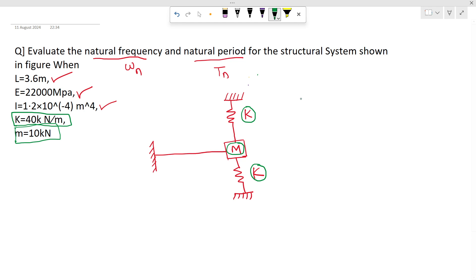We have to find natural frequency ωn equals square root of K equivalent upon m. To get ω in radian per second, we will require K equivalent in N per meter and mass should be in kg. So we have to follow these units.